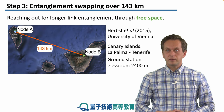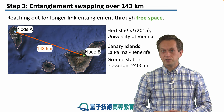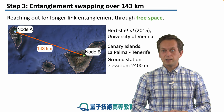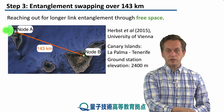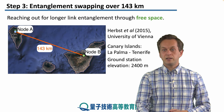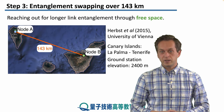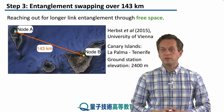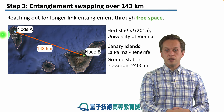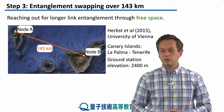The experiment was performed by Herbst and collaborators in 2015 from the University of Vienna, and it was carried out in the Canary Islands, namely between the islands of La Palma, which hosted node A, and Tenerife, which hosted node B. The distance between these nodes was 143 km, and the ground stations at node A and node B were elevated at 2.4 km.